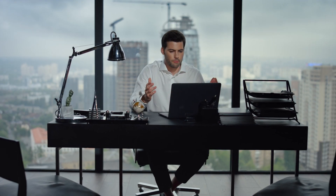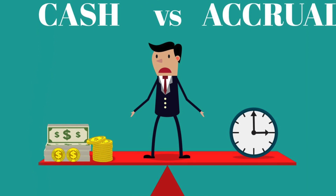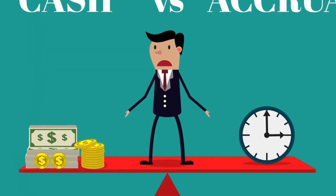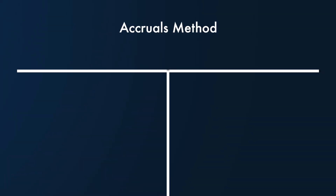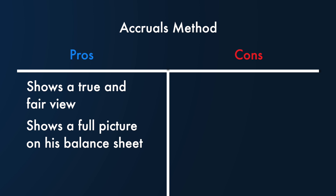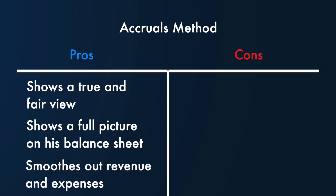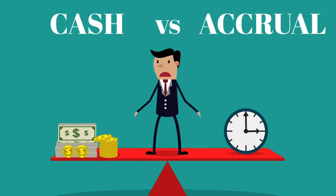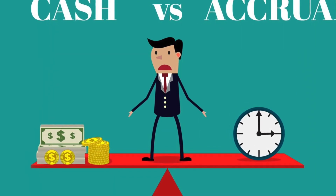The accountant explained the difference is a timing difference, and as the business grows and sells more apps, this timing difference amplifies and can impact cash flow and the tax bill in any given period. One advantage of the accruals method is that it shows a true and fair view of business finances at a point in time. It also shows the full picture on the balance sheet, supports concepts like depreciation, and smooths out revenue and expenses avoiding sharp spikes month-on-month. However, the accruals method is more complex, and both methods eventually provide the same result over time — though for many businesses this can take years.